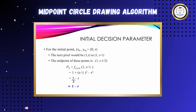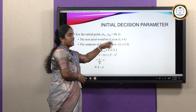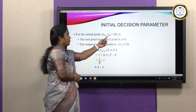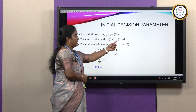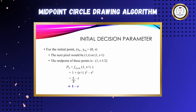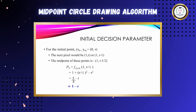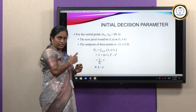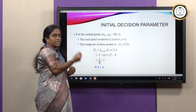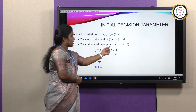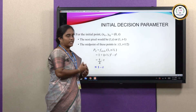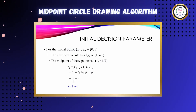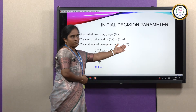Starting from initial point (0, r), the two possible next pixels are (1, r) or (1, r−1). We find the midpoint of these two pixels using the formula (x1+x2)/2, (y1+y2)/2, giving us the midpoint (1, r−1/2). We then substitute this midpoint into the circle function equation x² + y² − r².